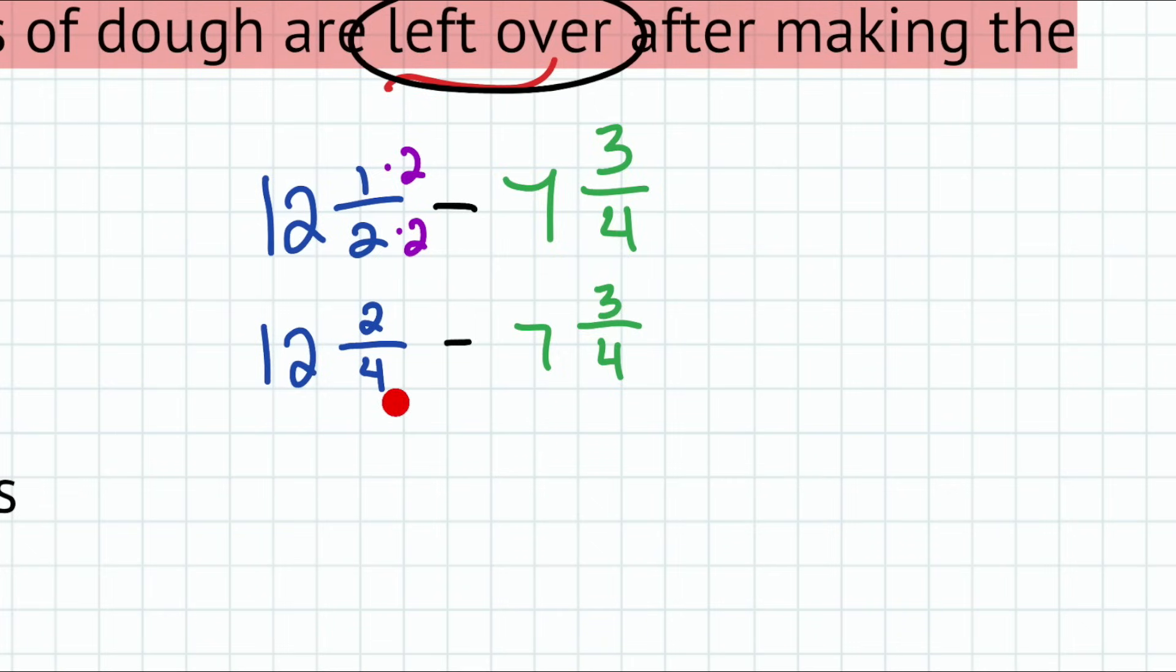Multiply by two in the numerator and denominator, changing our mixed number over here to 12 and two fourths. Now we're good to proceed and then change these into improper fractions. We take the whole number and we multiply it by the denominator. So 12 times four is 48 plus the two, that'll be 50. So that's 50 over four. And then we have seven multiplied by four, which is 28 plus three is 31. So we have 31 over four.